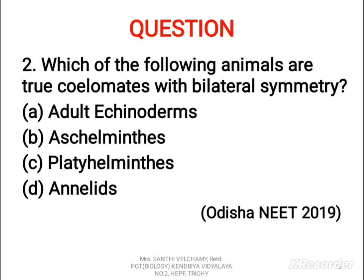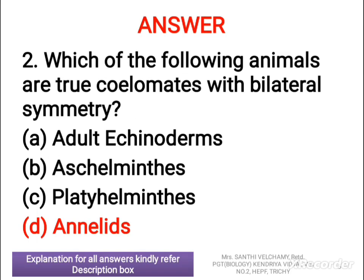Now the second question: which of the following animals are true coelomates with bilateral symmetry? A) adult echinoderms, B) Aschelminthes, C) Platyhelminthes, D) Annelids. The correct answer is D, Annelids.